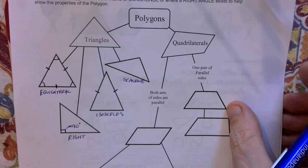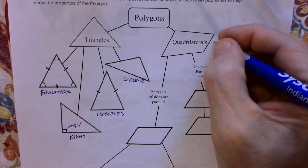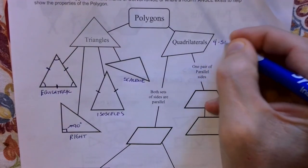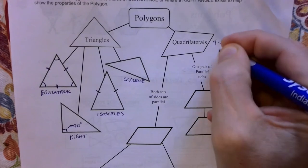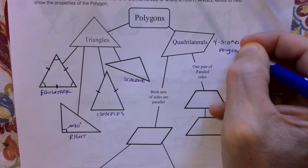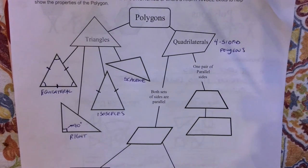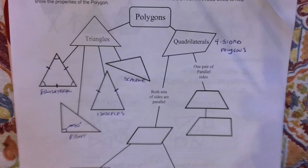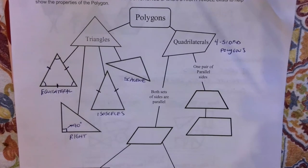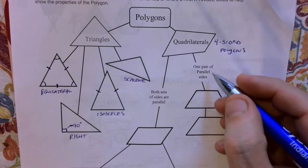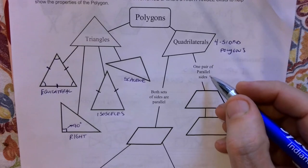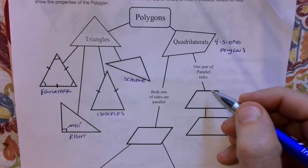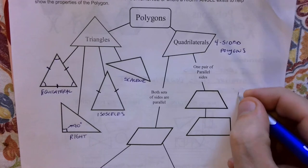Quadrilaterals are another group we're going to talk about. Quadrilaterals are four-sided polygons. If it fits all the criteria — four sides, enclosed, lines do not intersect — you have a quadrilateral. And if it has one pair of parallel sides, this is called a trapezoid.